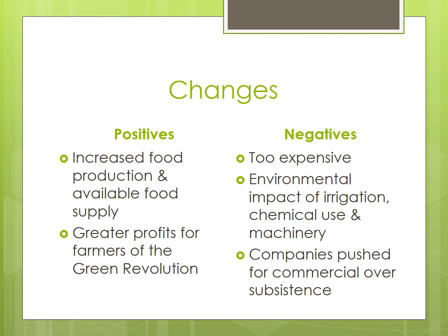Let's recap some of the positive and negative changes associated with the Green Revolution. On the positive front, global food production increased dramatically on relatively the same acreage. Through genetic modification, we have crops that produce more food per plant, are resistant to pests, and have a shorter growing season, so farmers can now grow three crops per year. This increased food output reduced hunger, lowered death rates, and fed an expanding global population.